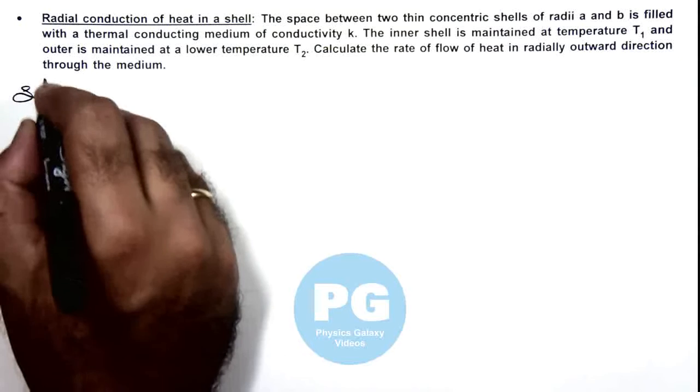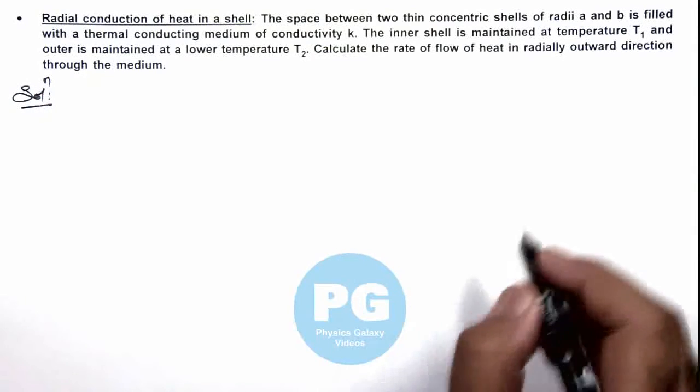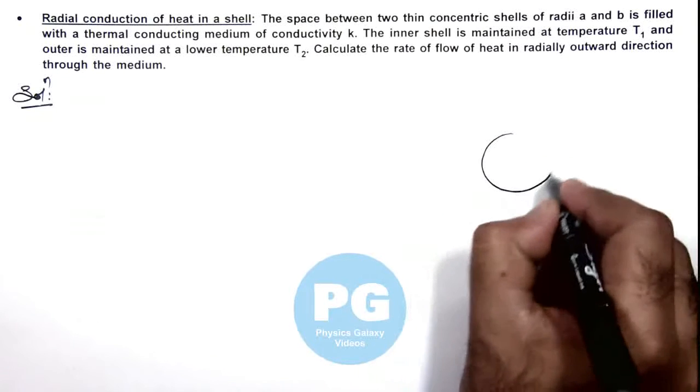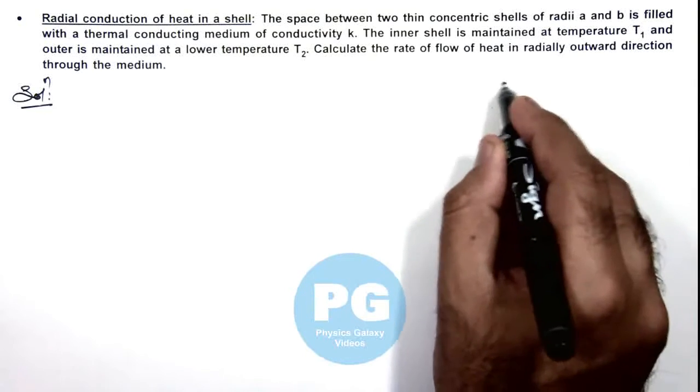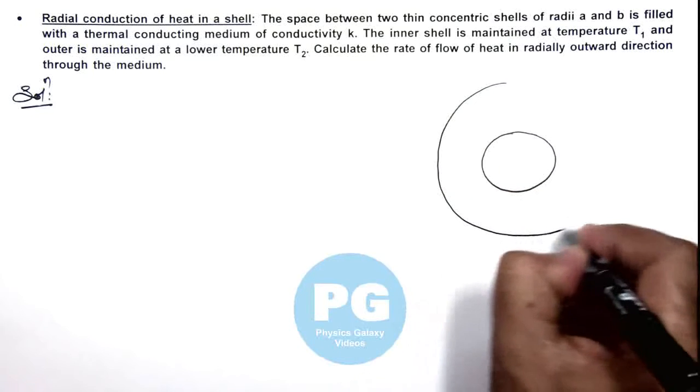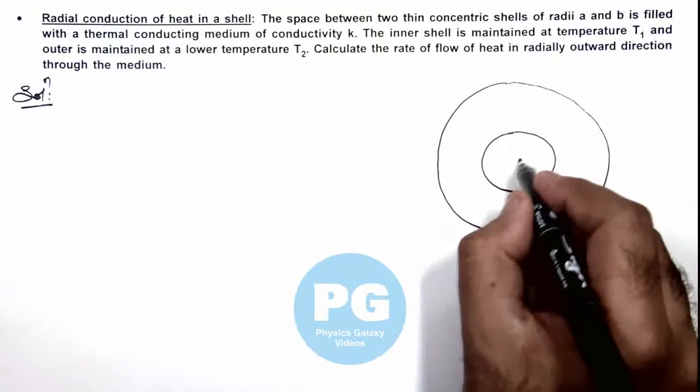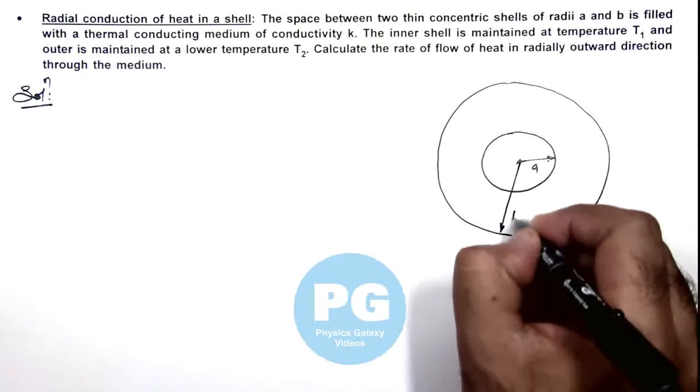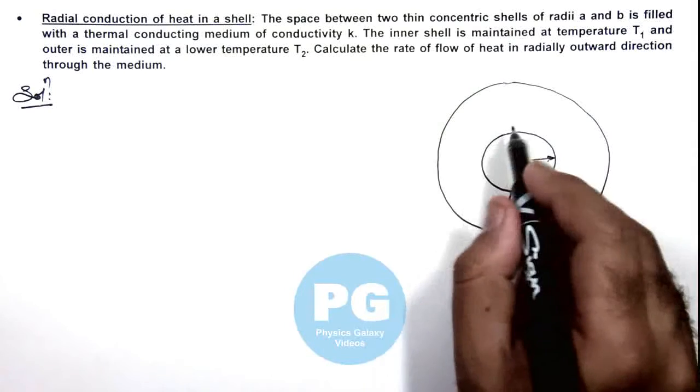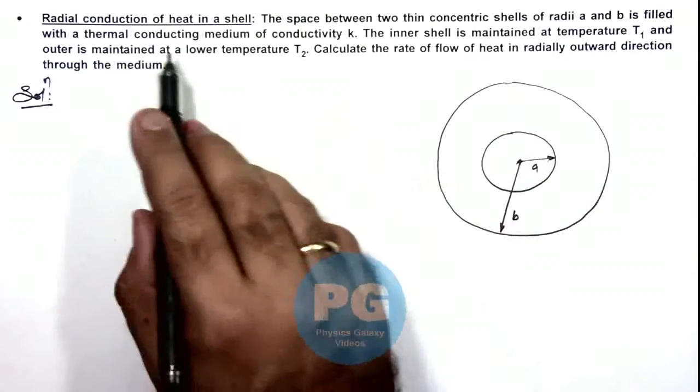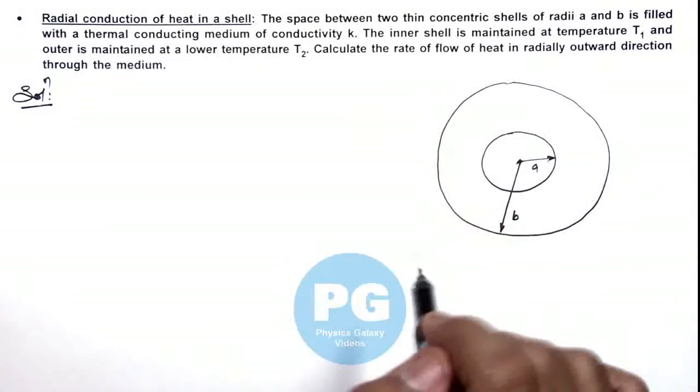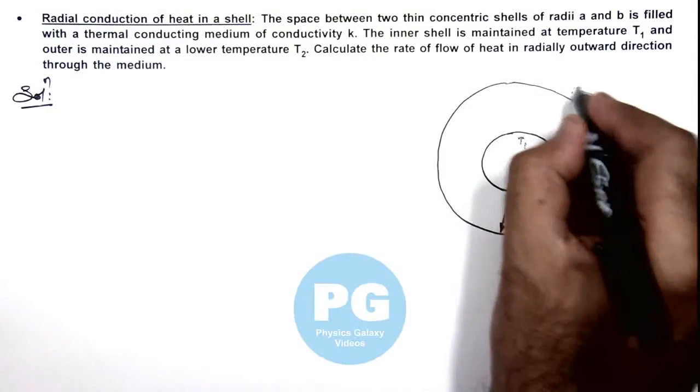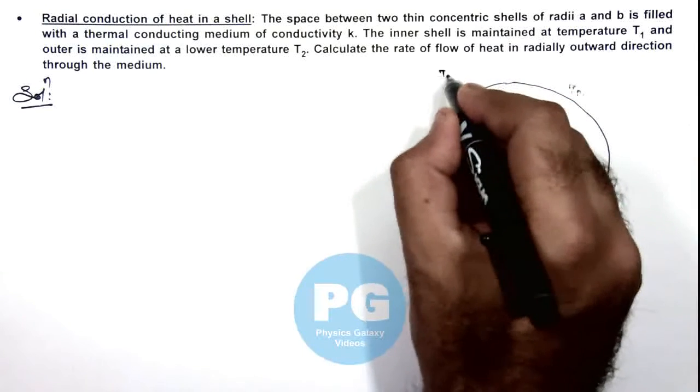Here, if we draw the situation, we can see this is the inner shell and this is the outer shell. This is of radius a and this is of radius b. The material in between is filled with thermal conductivity k. Now if we wish to find out the heat flow from the inner shell to the outer shell, as we are given that T₁ is greater than T₂.